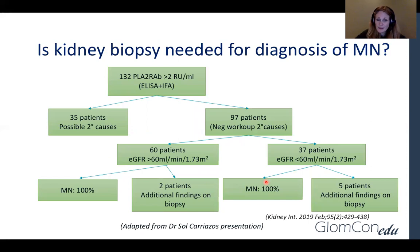Moving to the next topic: is kidney biopsy always needed for diagnosis of membranous nephropathy? This is from a study published in Kidney International in 2019. It included 132 PLA2R-positive patients, where 97 patients had a negative workup for secondary causes. 60 of those patients had a GFR over 60 and 37 under 60. Only two patients in the higher GFR group had additional findings on biopsy, and in both cases it did not change the management.